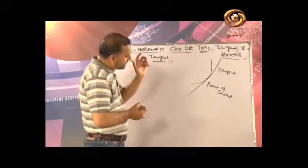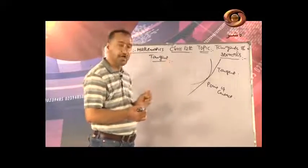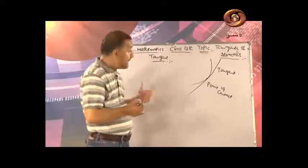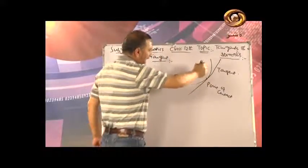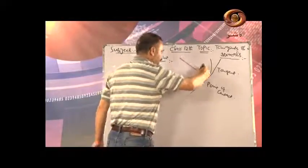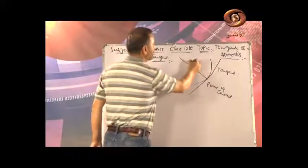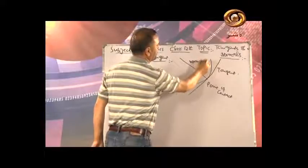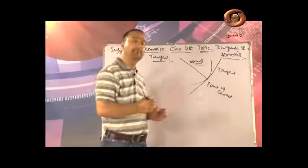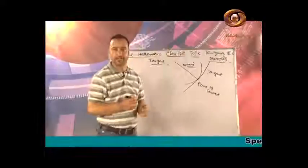The point where the tangent touches the curve is called the point of contact. If we draw a line perpendicular to the tangent at this point of contact, that line is called the normal. So the tangent and the normal are perpendicular to each other — they make a 90-degree angle.